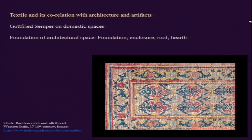Semper extended his understanding of ornamentation and decoration to textiles and decorative items. In terms of architectural space, he identified four aspects: the foundation, the enclosure, the roof, and the hearth or floor.